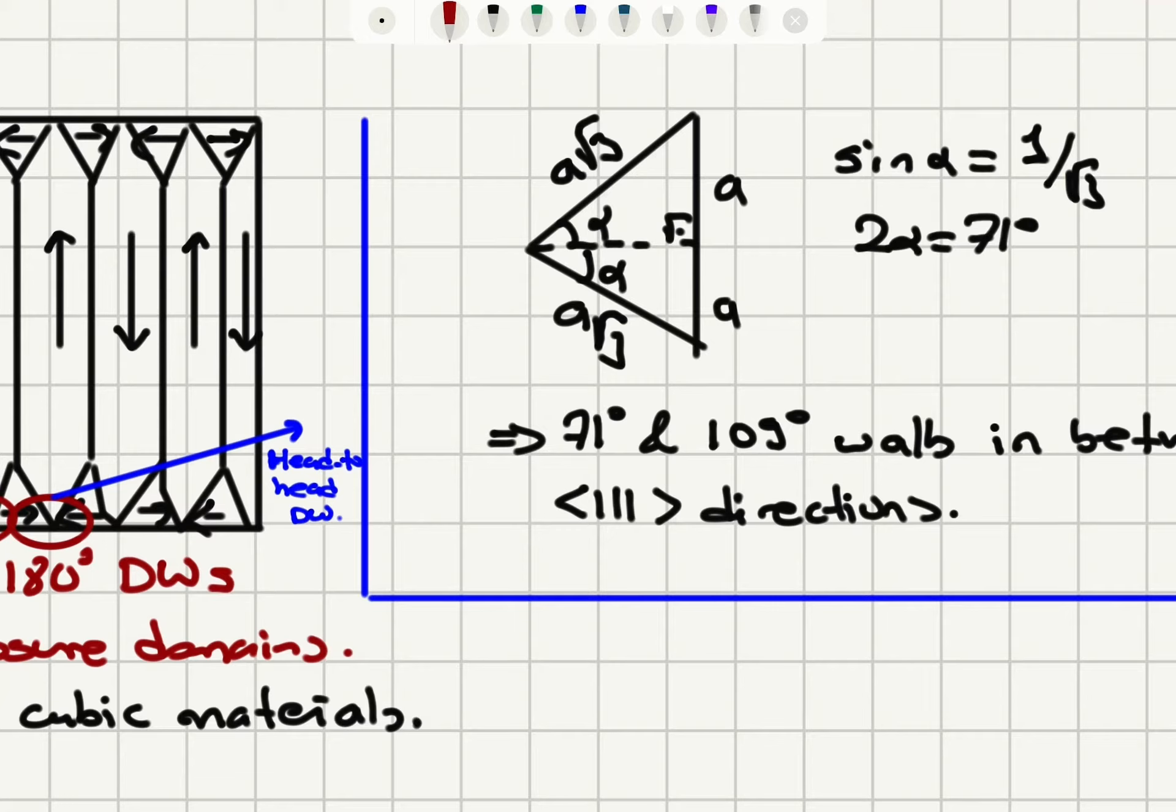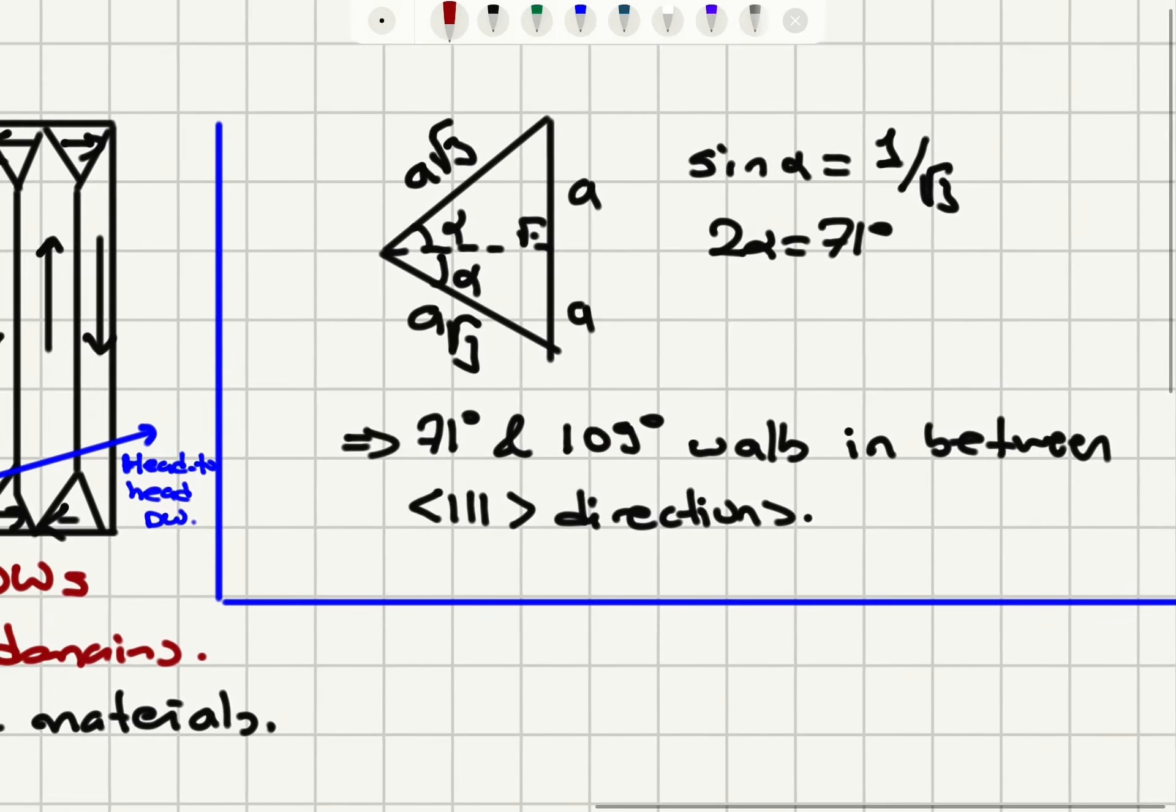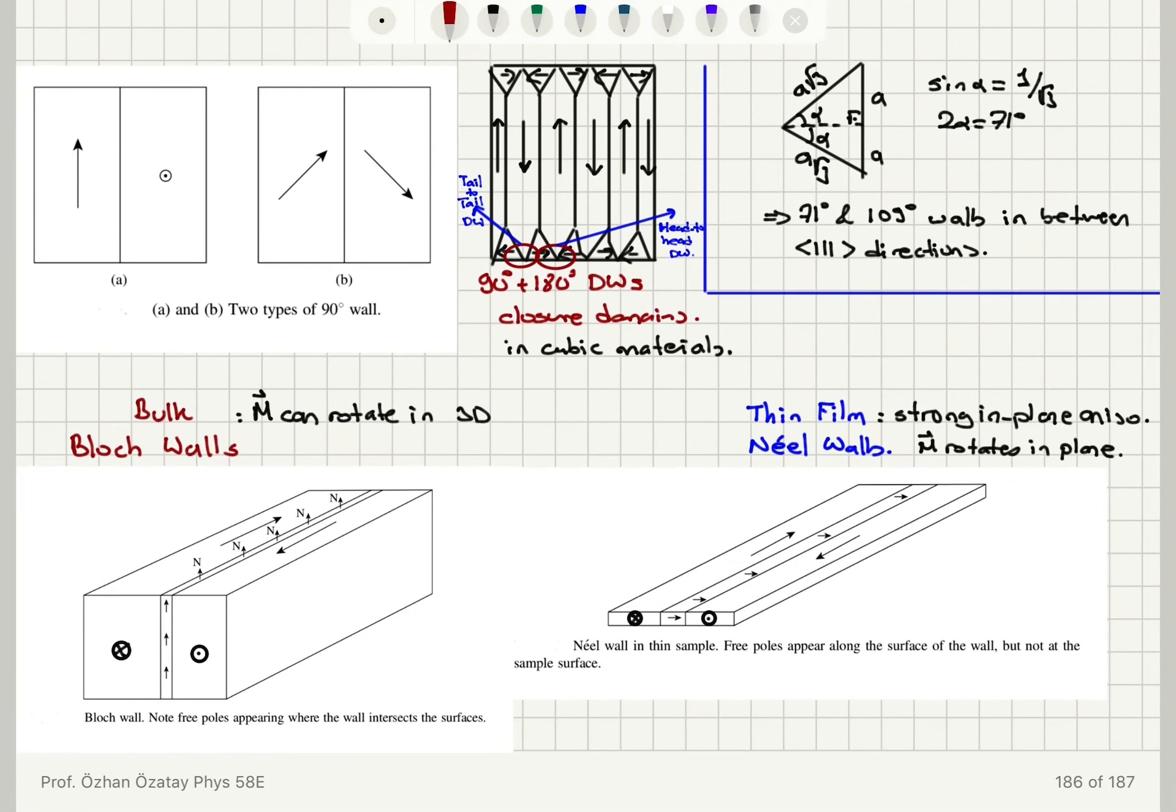between the hypotenuse and the body diagonal is arcsin of 1 over square root 3, so that the angle between two body diagonals, 2 alpha, would be 71 degrees. So one possibility is 71, another possibility is 109 degree walls in the 111 directions.